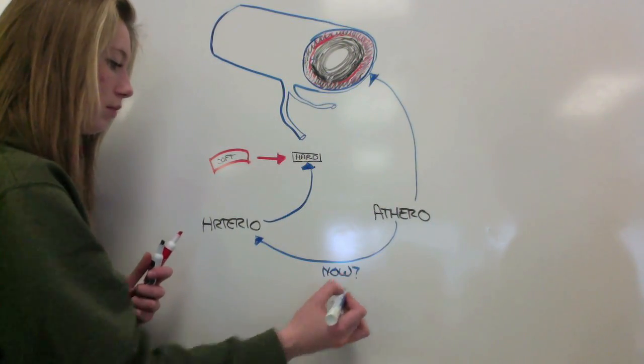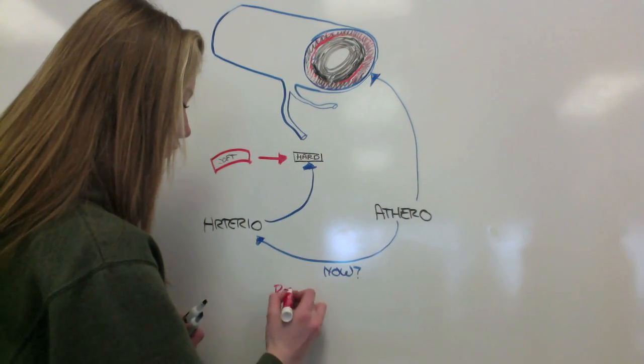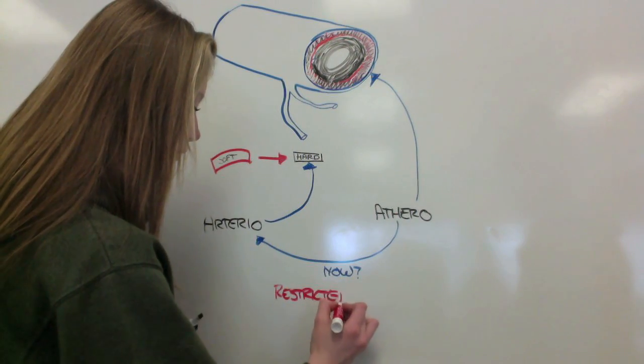Atherosclerosis is the how of arteriosclerosis. What happens? Blood flow becomes restricted.